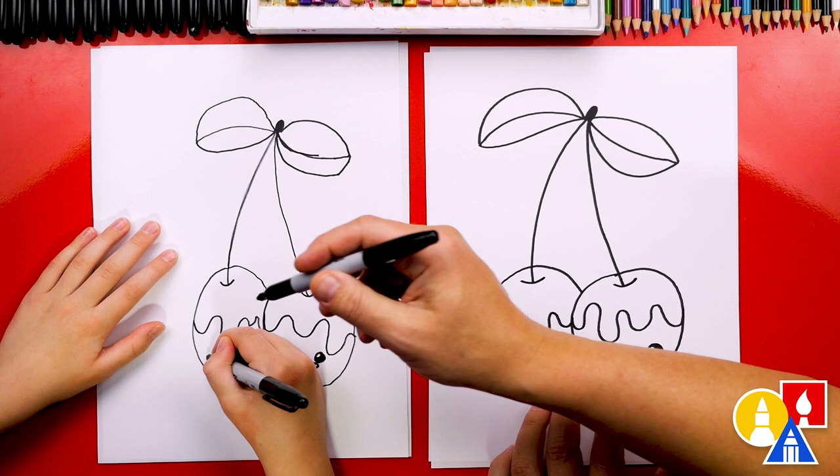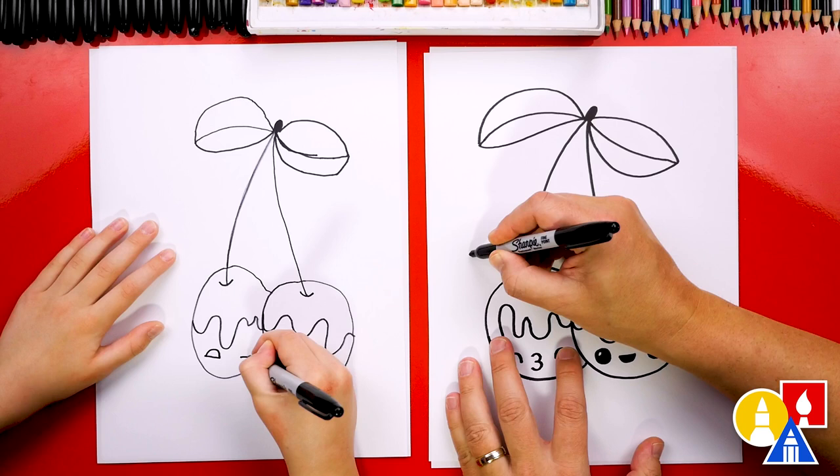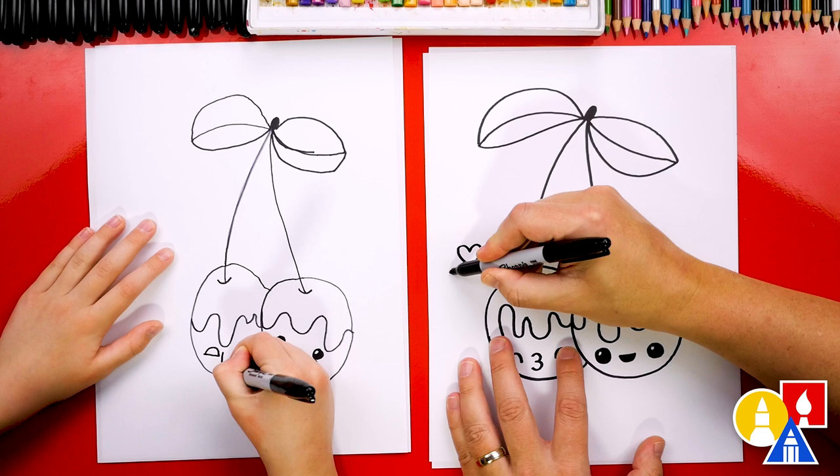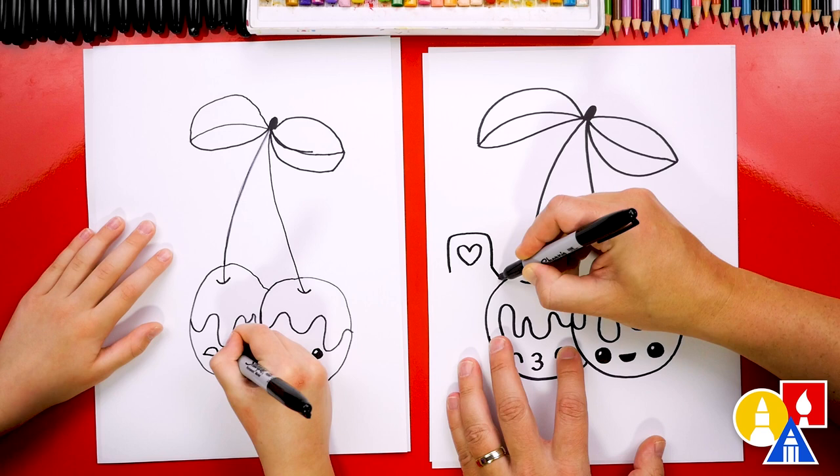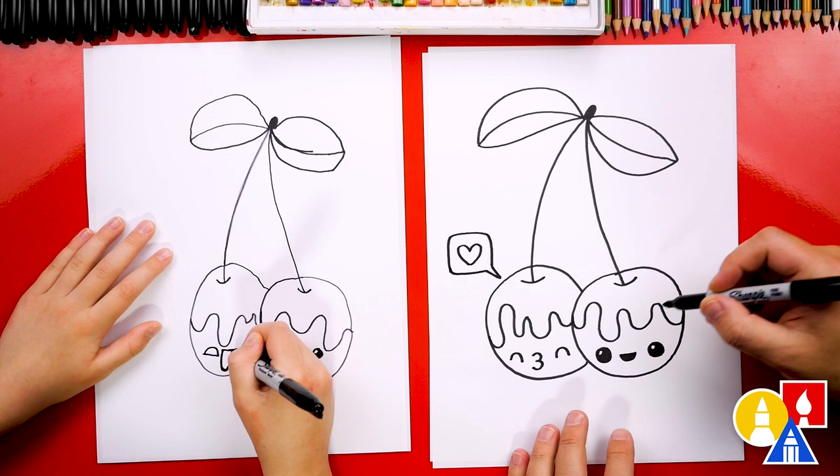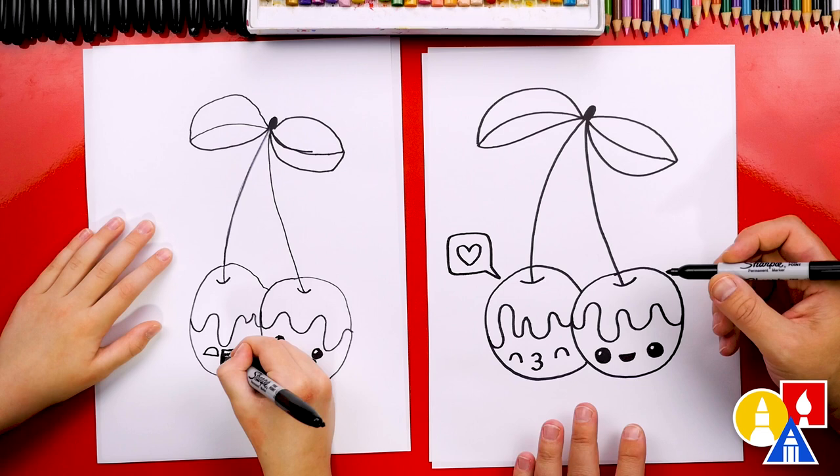Okay, you go ahead and add another face to your other cherry. I'm gonna draw a little heart right here. Also, and you could add even more extra details to your drawings. I'm gonna do a little speech bubble across the heart or around the heart. Comes around like this and then connect in. This cherry loves this cherry. I like it. I like that the mouth is open. That's awesome.